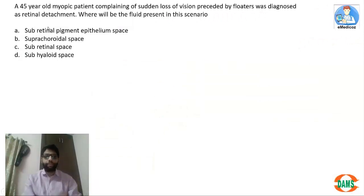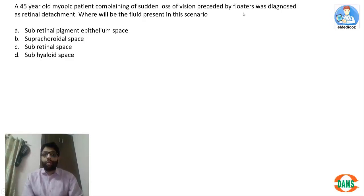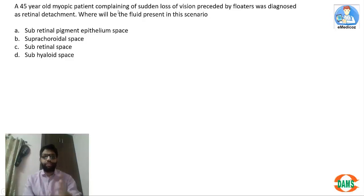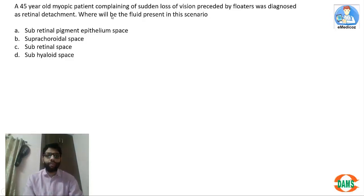A 45-year-old myopic patient complaining of sudden loss of vision preceded by floaters was diagnosed as retinal detachment. In rhegmatogenous retinal detachment, the patient has floaters, flashes, and then sudden painless loss of vision, with field defect ultimately leading to sudden painless loss of vision. The question is: where will the fluid be present in this scenario?